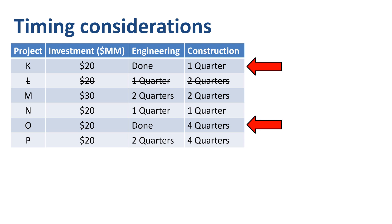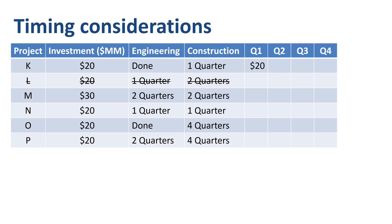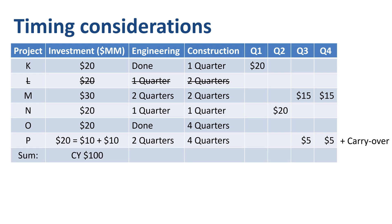Project K and O are available for immediate launch — Project K having the most attractive payback period out of the productivity projects, and Project O the least attractive NPV and IRR out of the growth projects. Let's certainly put Project K in for Q1. To finish allocating our $50 million available for productivity projects, let's put $15 million each in Q3 and Q4 for Project M. The ranking of our growth projects is N, P, and then O. Let's get Project N done in Q2. For Project P, we start in Q3 and continue in Q4, creating $10 million of carryover into the next year as the project takes four quarters to construct. This splits Project P into Phase 1 and Phase 2, with Phase 1 going to this year's CapEx budget and Phase 2 into next year's, limiting CapEx spending for the current year to the $100 million that is available.